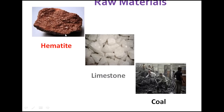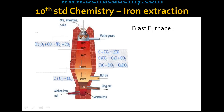These are the three raw materials required. The foremost and most important raw material is the ore of iron, that is hematite. Hematite is iron oxide, that is ferric oxide, mixed with some impurity called silica, which is ordinary sand. In order to remove the silica, limestone is added, and in order to convert iron oxide into iron, coke is used. Coke is also used as a fuel to heat the raw material.